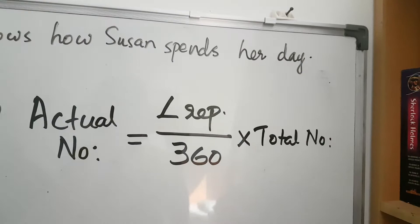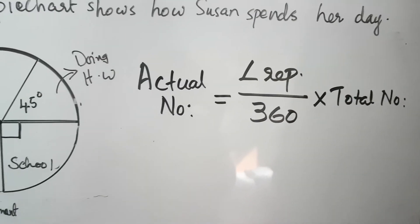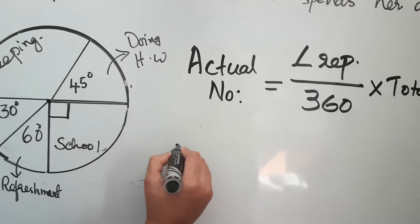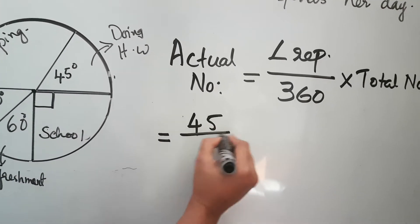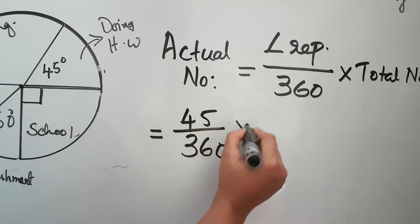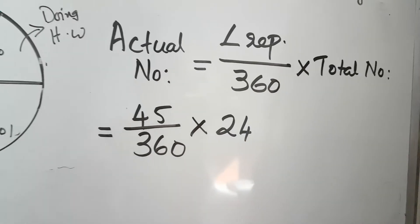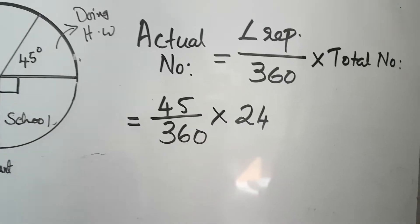For example, the number of hours doing homework can be represented by 45 divided by 360, multiplied by the total number. I will take 24 because there are 24 hours in a day.